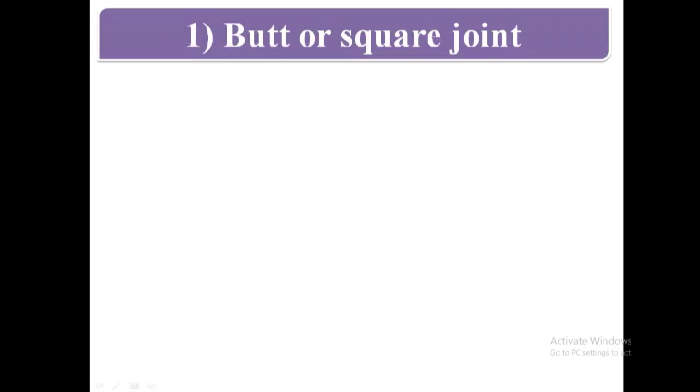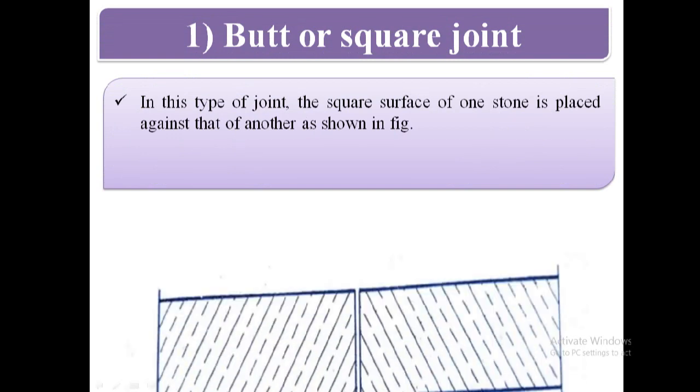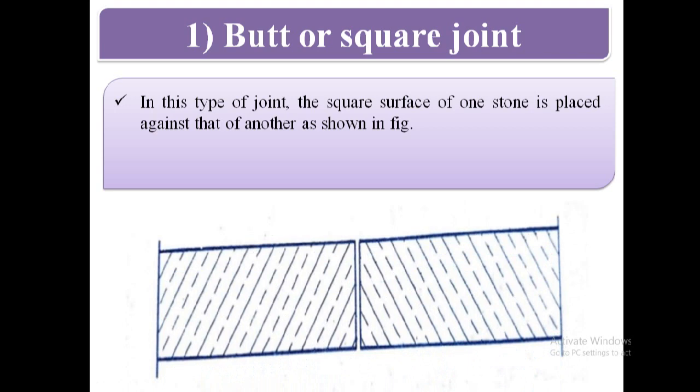First type of joint is butt or square joint. In this type of joint, the square surface of one stone is placed against that of another as shown in figure. In this figure, we can see the square surface of one stone is placed against that of the another.